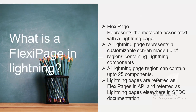What is a Flexi page in Lightning? A Flexi page represents the metadata associated with a Lightning page. A Lightning page is a customizable screen made up of regions containing Lightning components. A Lightning page region can contain up to 25 components. Lightning pages are referred to as Flexi pages in the API.